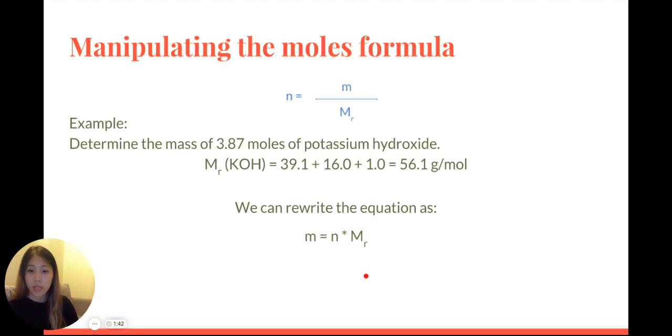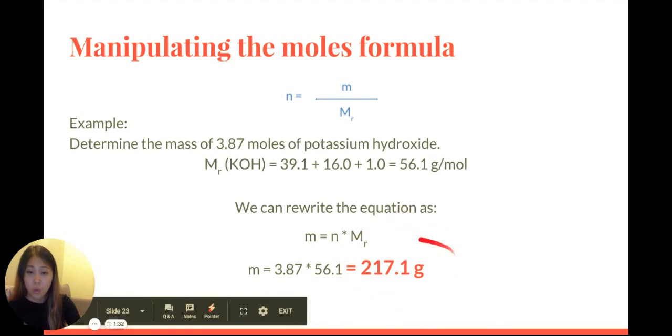So we can rewrite this as mass equals moles multiplied by molar mass. We have moles and molar mass, so we multiply the two together, and we get 217.1 grams.